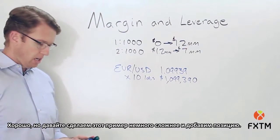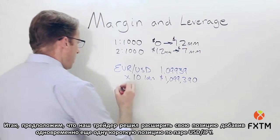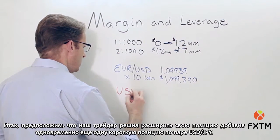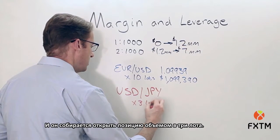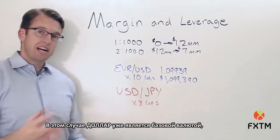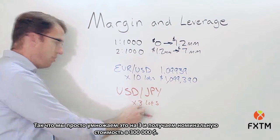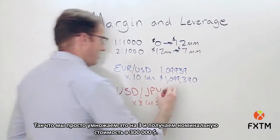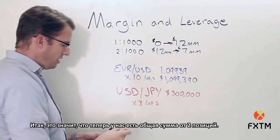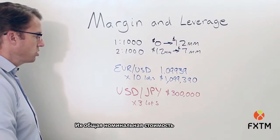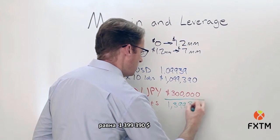But let's make it more complicated by adding a position. Our trader has decided to enlarge her position by simultaneously going short the dollar/yen pair — opening 3 lots. Since the dollar is on the base side, 3 lots equals 300,000 units, giving $300,000 in notional value. That brings the total notional value across both positions to $1,399,390.